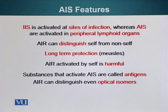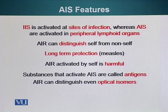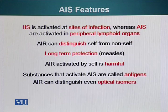The innate immune system is activated at the site of infection. The adaptive immune system is activated in the peripheral lymphoid organs — for example, the lymph node. So after the innate immune system has been activated, some components of it — for example, some T cells — will go and visit the site of infection. Otherwise, adaptive immune cells don't get activated at the site of infection.